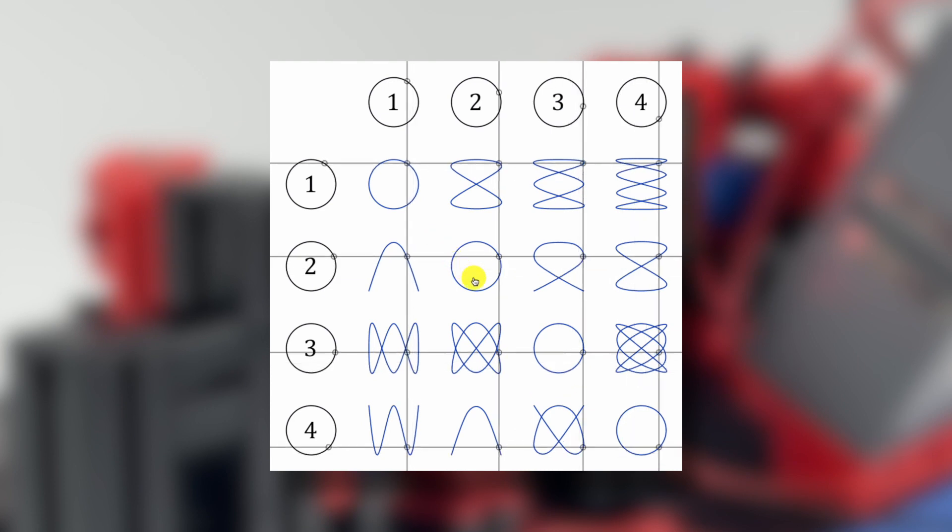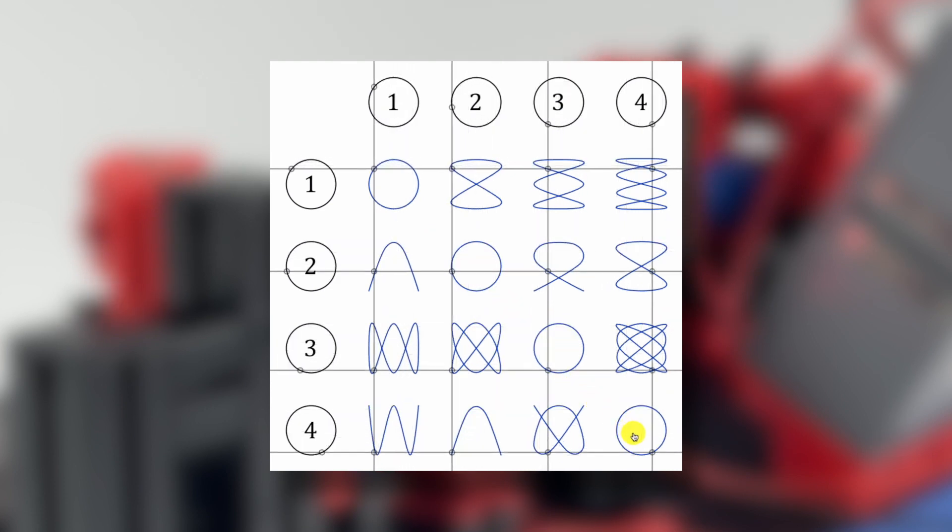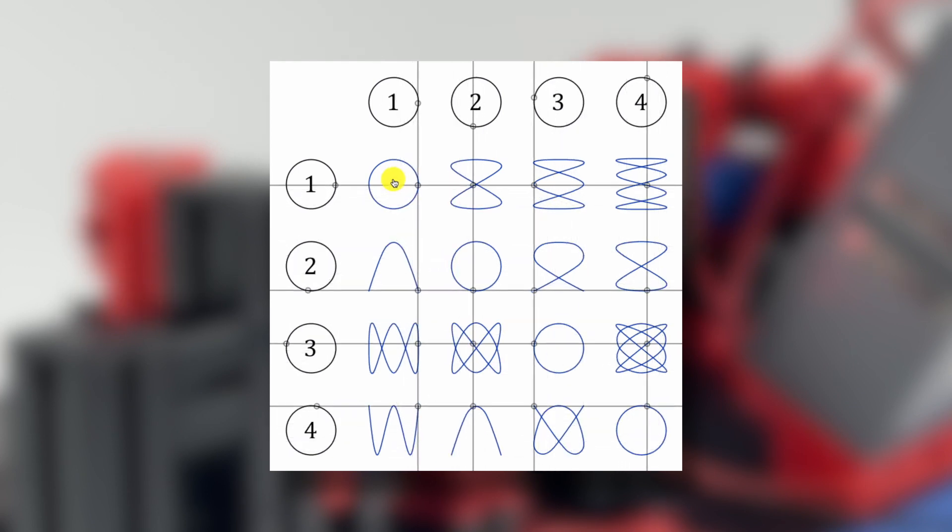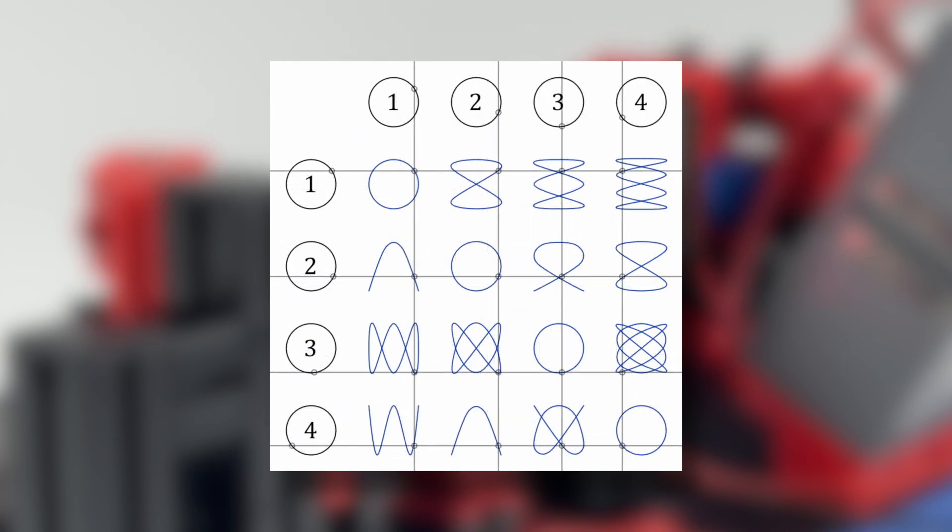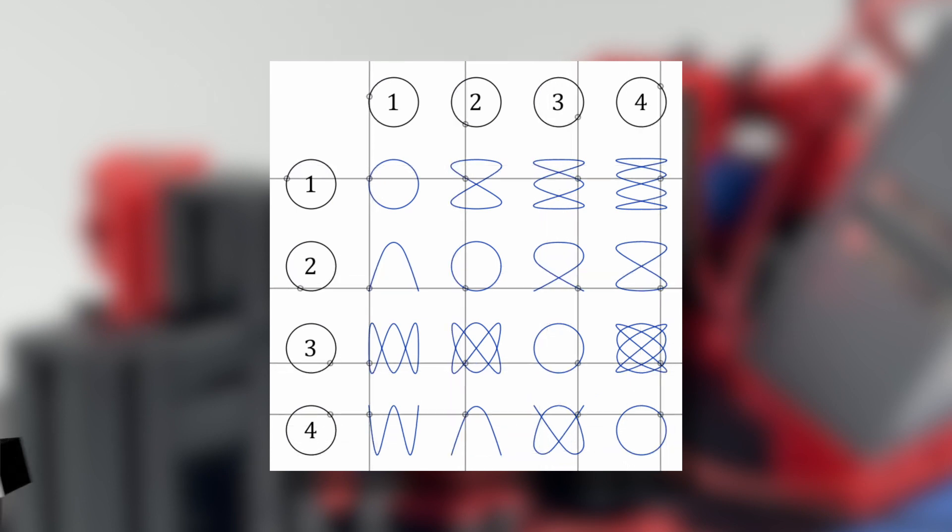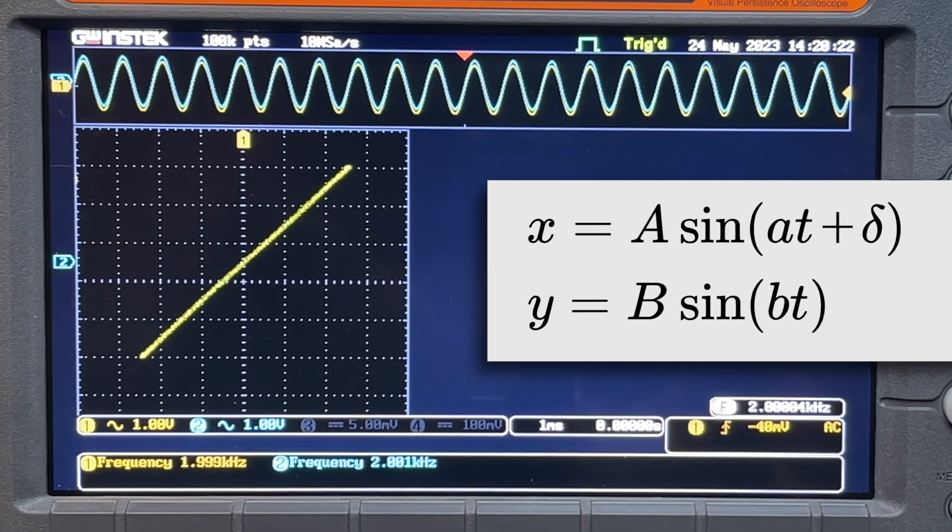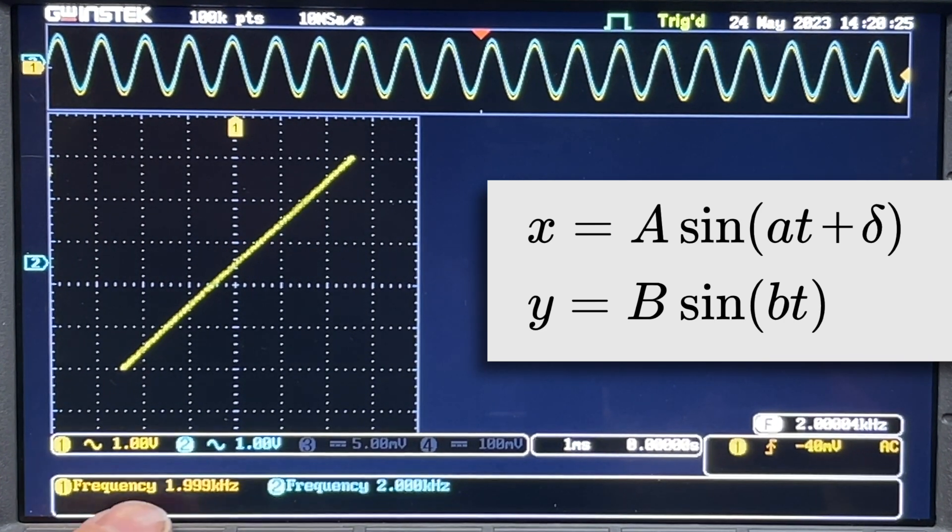If the frequency ratio is one to one, we'll see a circle. The difference in phase between these waves determine which side of the circle we actually see. In this case, this appears to be a straight front view so we see a clean circle. But with shifted phase, the circle appears to be a single diagonal line on this oscilloscope.